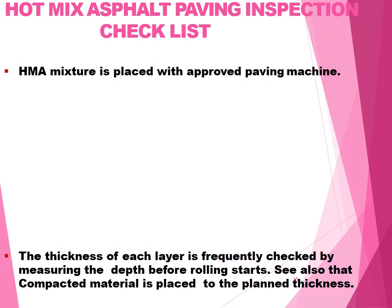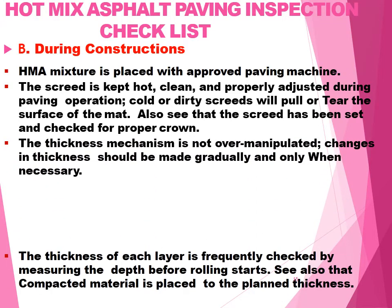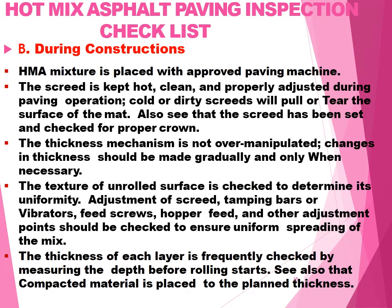Hot mix asphalt paving inspection checklist — during construction: the HMA mixer is placed with an approved paving machine. The screed is kept hot, clean, and properly adjusted during paving operations — cold or dirty screeds will pull or tear the surface of the mat. The screed is checked for proper crown. The thickness mechanism is not over-manipulated; changes in thickness should be made gradually and only when necessary. The texture of the unrolled surface is checked to determine uniformity of the screed, tamping bars or vibrators, feed screws, and hopper feed. The thickness of each layer is frequently checked by measuring the depth before rolling starts.